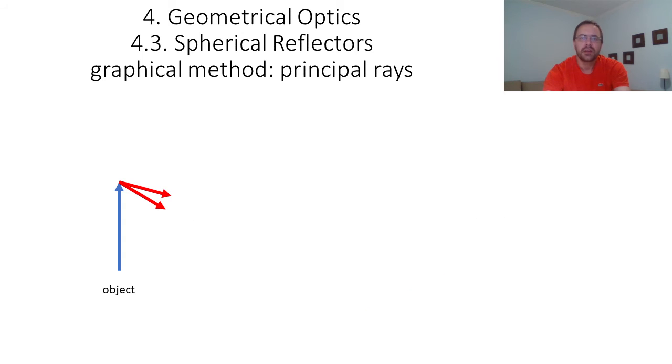One note is that if the object is at infinity, for example when you're watching a star or something that is very far away, you will not be able to trace rays going through the object. In this case, you need to take rays that are parallel to each other to represent the fact that the object is at infinity.